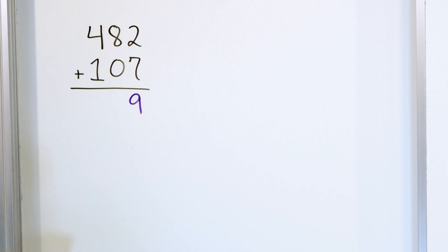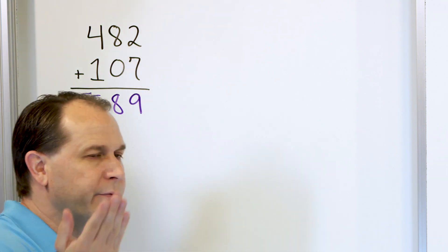Then we have 8 plus 0, means nothing really changes, it stays at 8. And then we have 4 going up one more means 5, so we have the answer of 589. Now in this case we didn't have to carry, because none of these numbers were larger than 10 or larger. So we just wrote the number down.